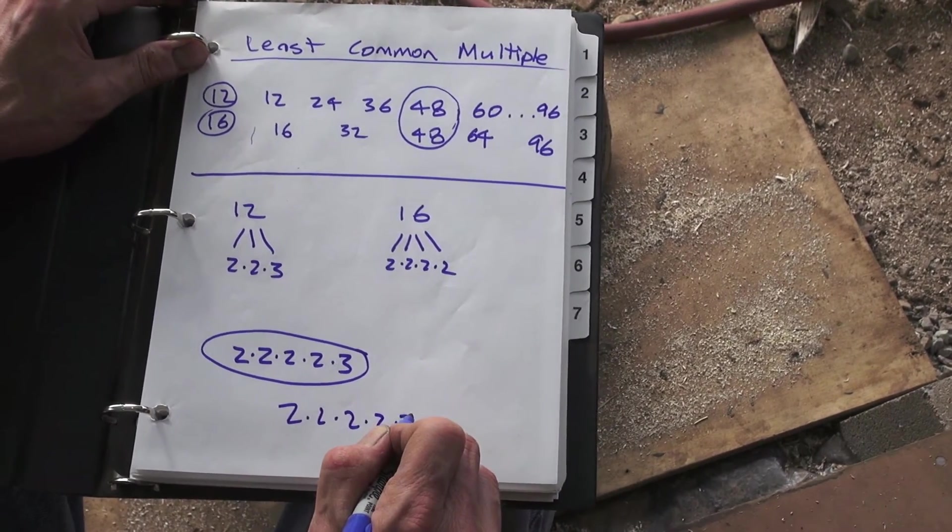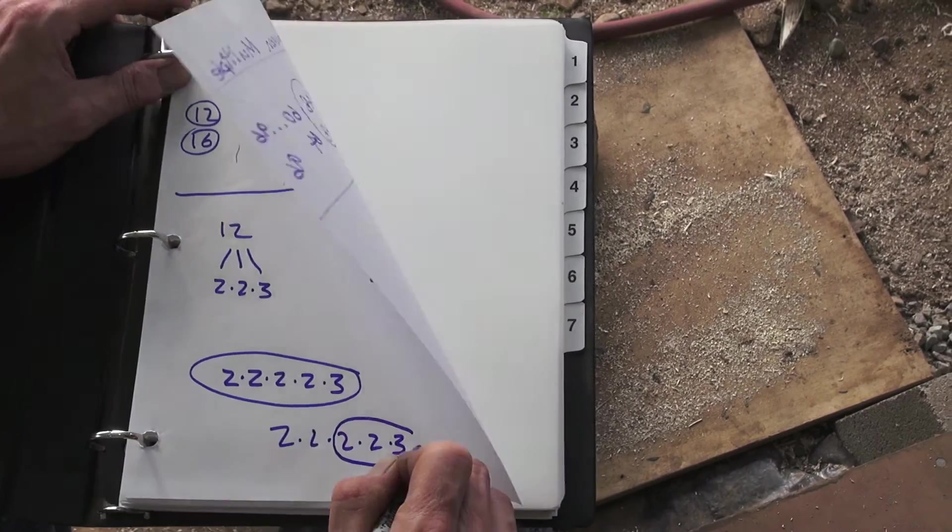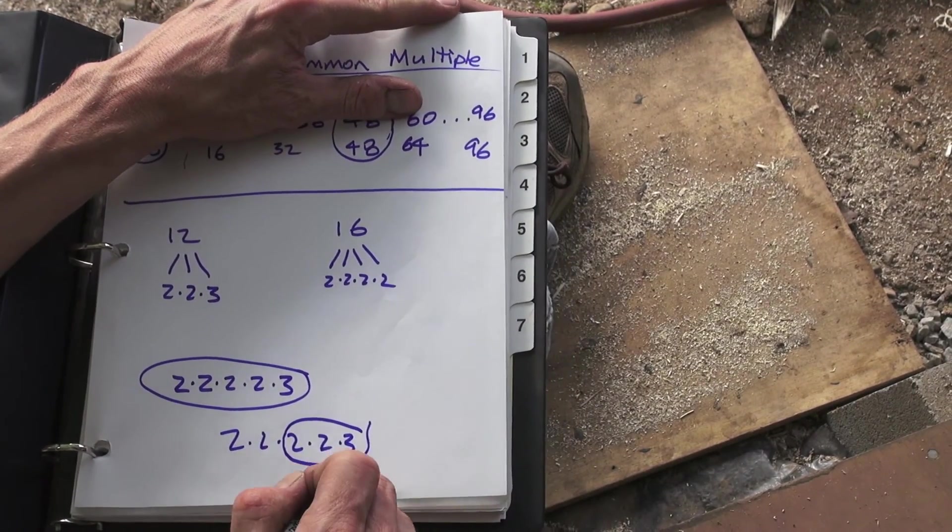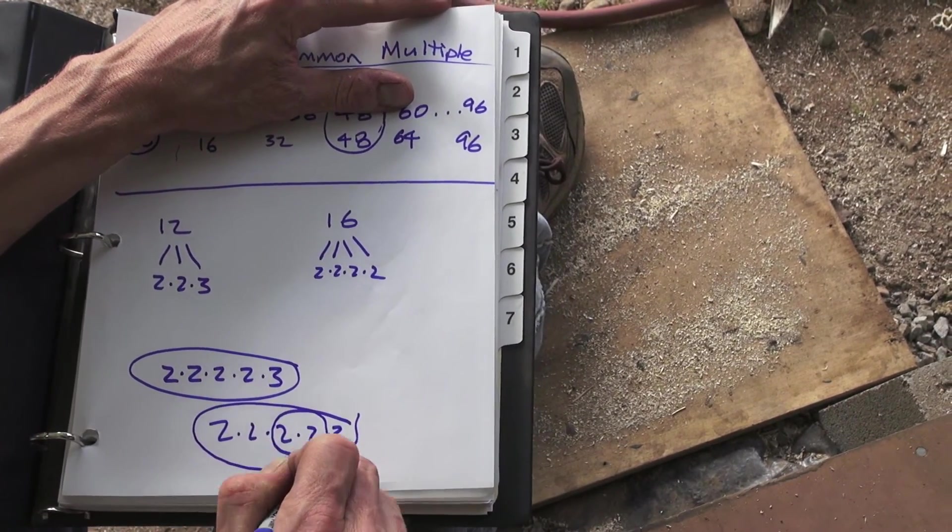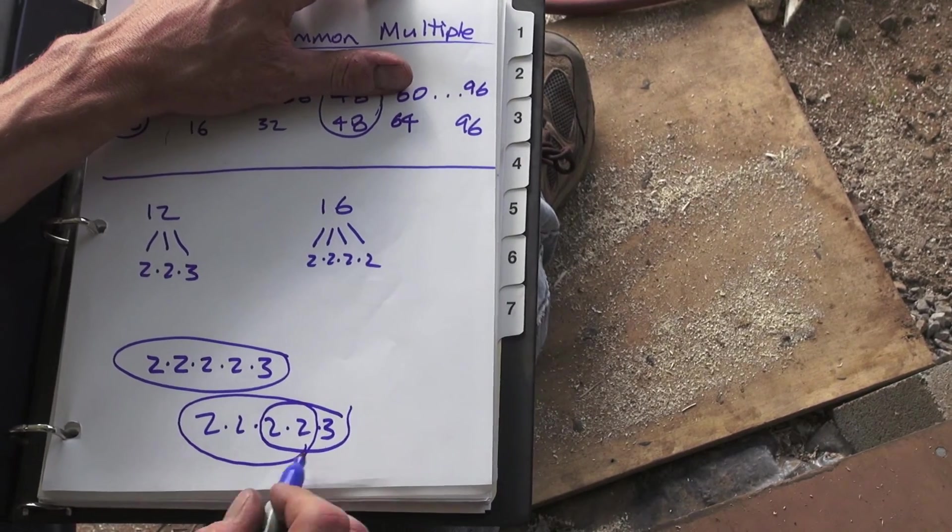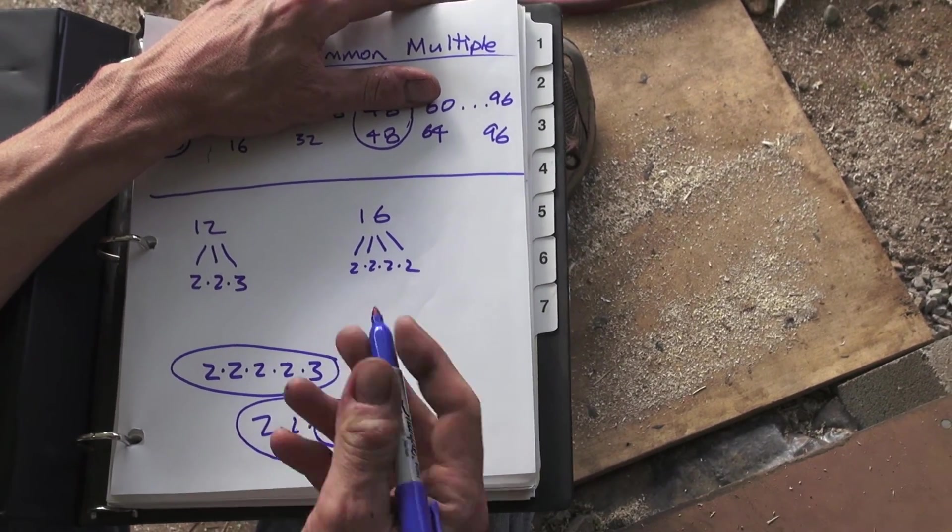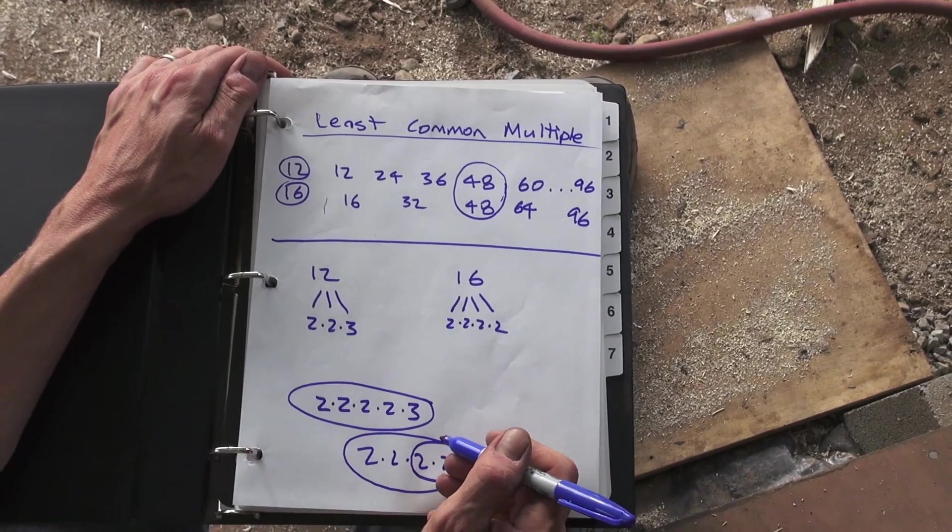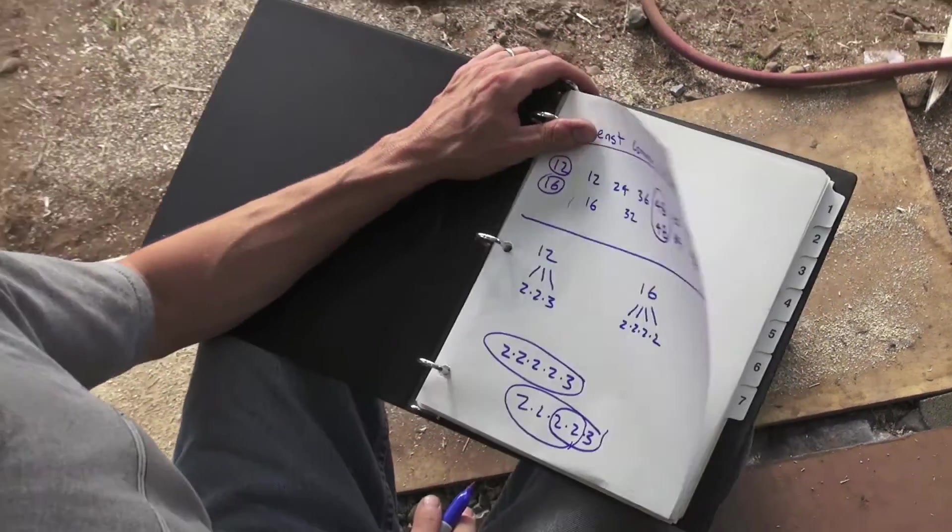It's got to have enough to make a 12, and it's got to have enough to make a 16, right? It's all the factors to cover both of them. All right, so that's a couple different ways to find least common multiple.